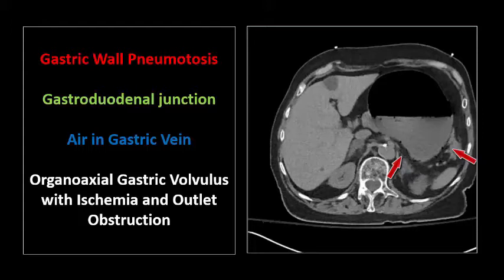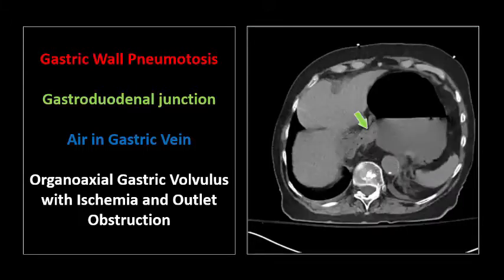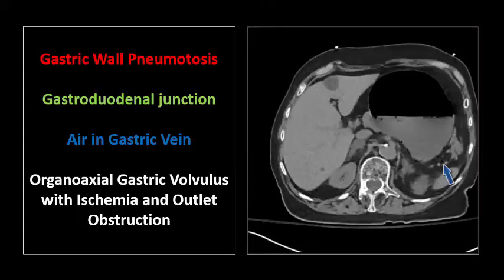Here we see pneumatosis in the gastric wall, indicative of ischemia, and a distended stomach. We see the gastroduodenal junction is herniated, contributing to the gastric outlet obstruction. And we see a small amount of air in an adjacent left upper quadrant draining gastric vein. So this is a case of organoaxial gastric volvulus complicated by ischemia and outlet obstruction.